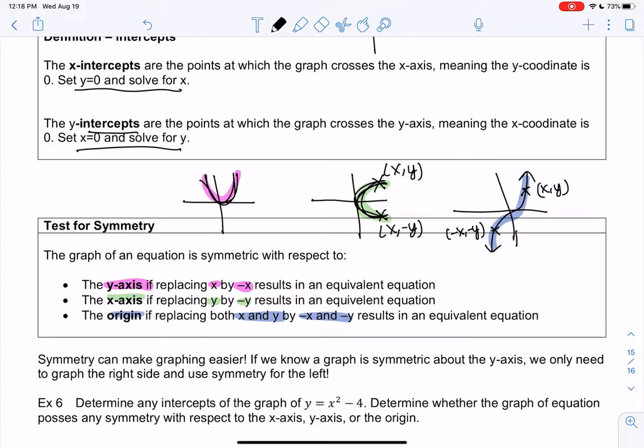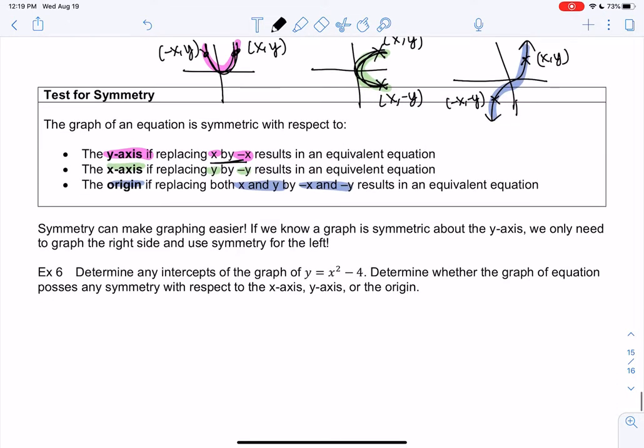The x isn't changing, but the y is. And then for the first one, the x is changed, but not the y. So x, y, and negative x, y. So this can give us some shortcuts for graphing. If we know symmetry, we only really have to graph part of the graph. So let's check one out.